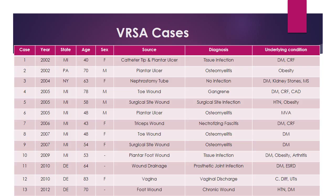Here's a chart I created with the actual 13 cases reported in the United States from 2002 until 2012. Most cases have been in Michigan. The age range is anywhere from the 40s up to the 80s, and it's almost a 50-50 mix between male and female. I've included the different sources of VRSA — where it was found, anywhere from toe wounds to surgical site wounds — as well as patient diagnoses and underlying conditions, showing that many patients had diabetes, obesity, or heart-related conditions like hypertension. A glossary of abbreviations and medical terms is included at the end of this presentation.